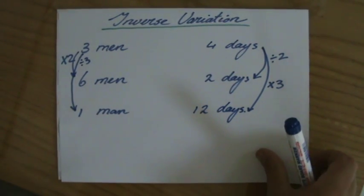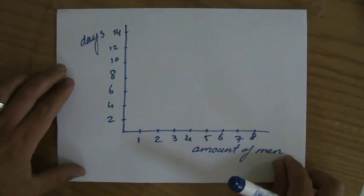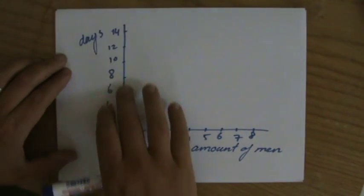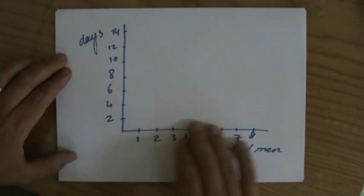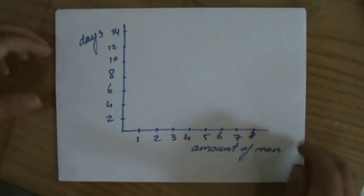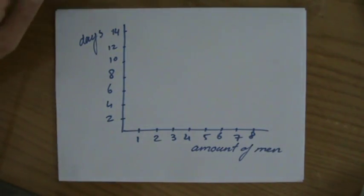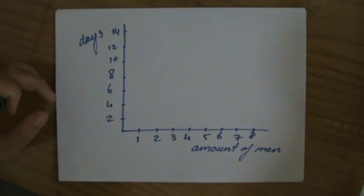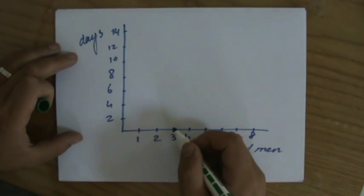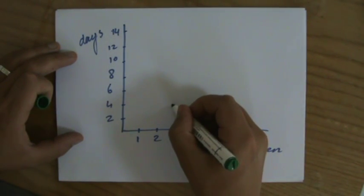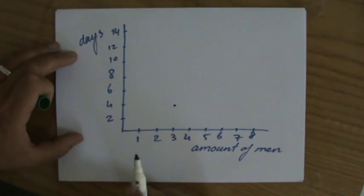Now if I would sketch that in a graph, so we're talking now about inverse variation, and I drew some axes here. I have the days on my vertical y-axis and the amount of men horizontally on my x-axis. We've said that three men take four days.